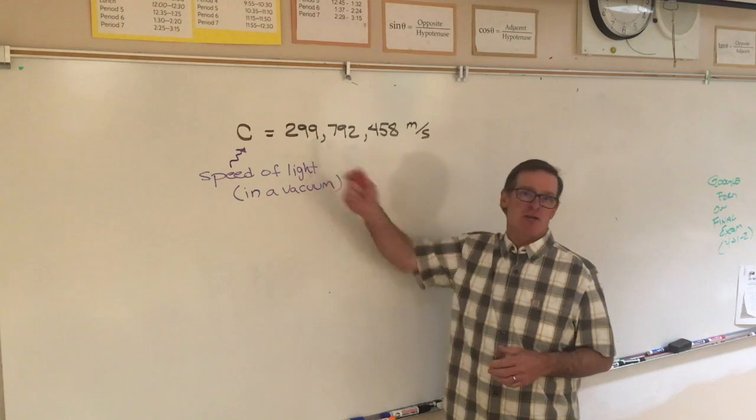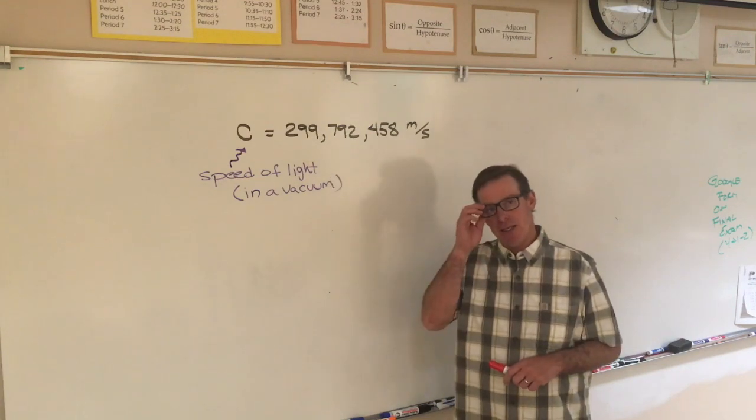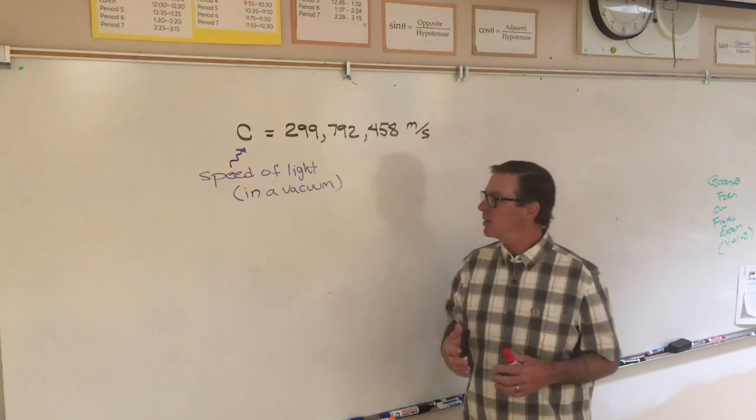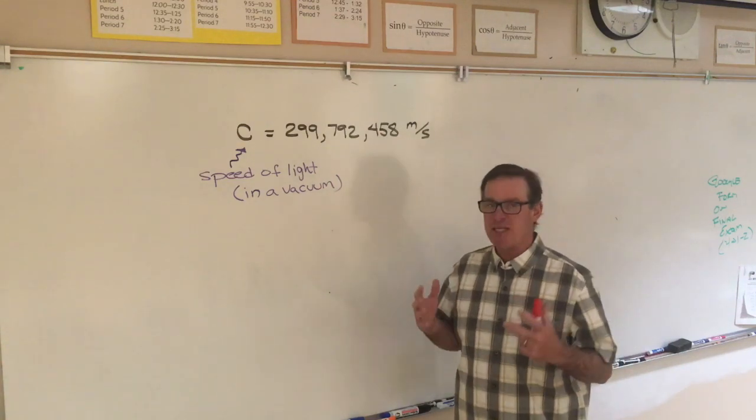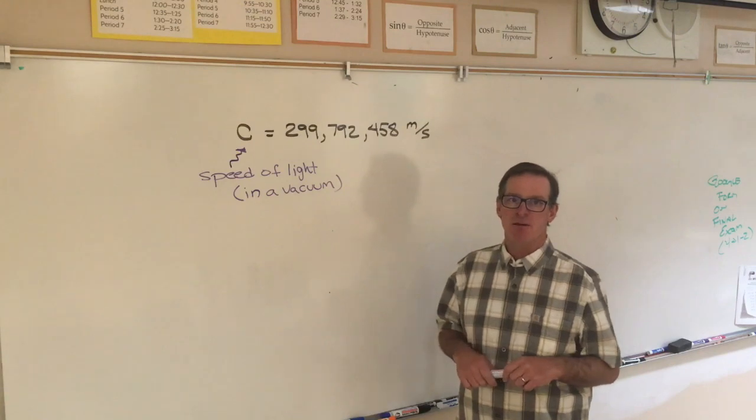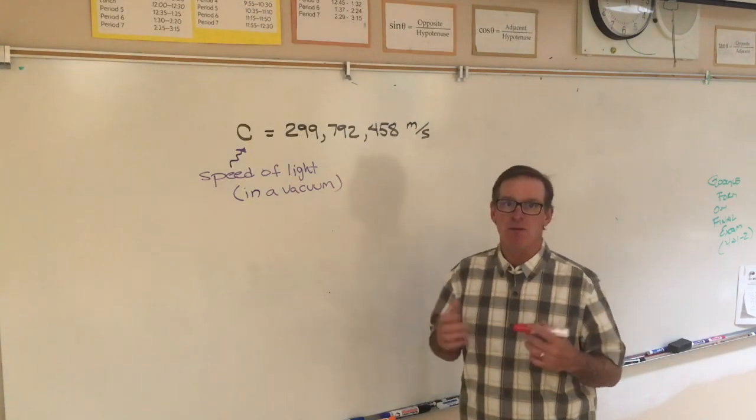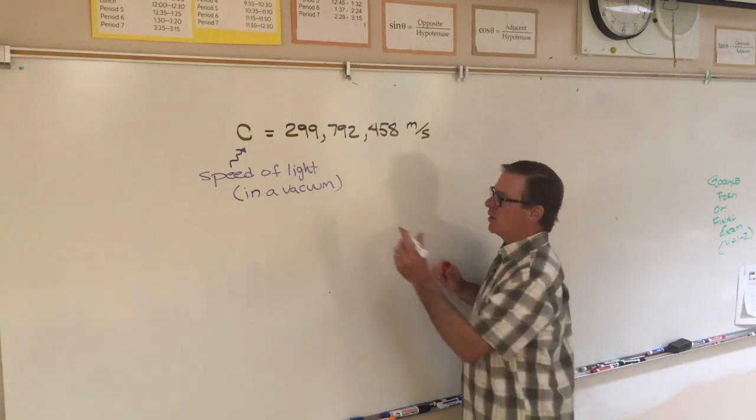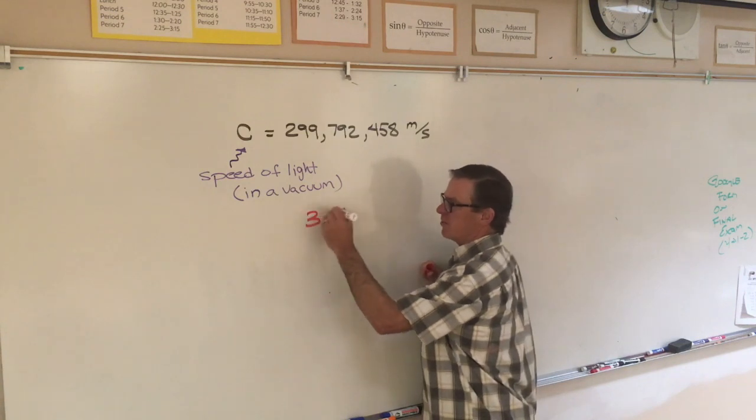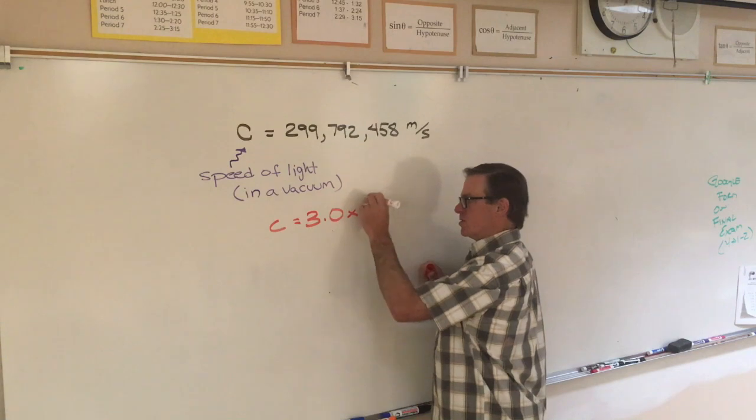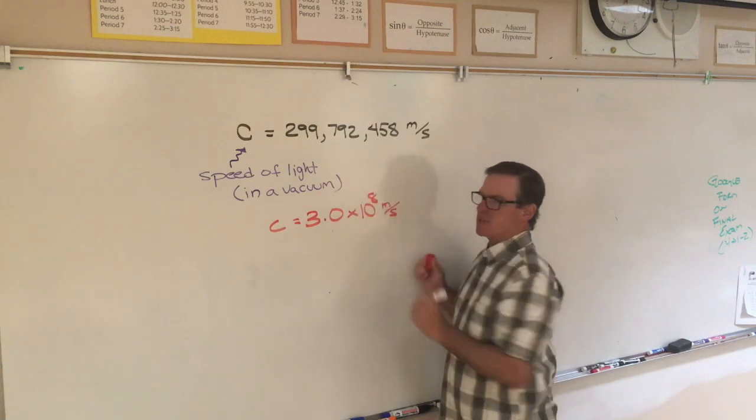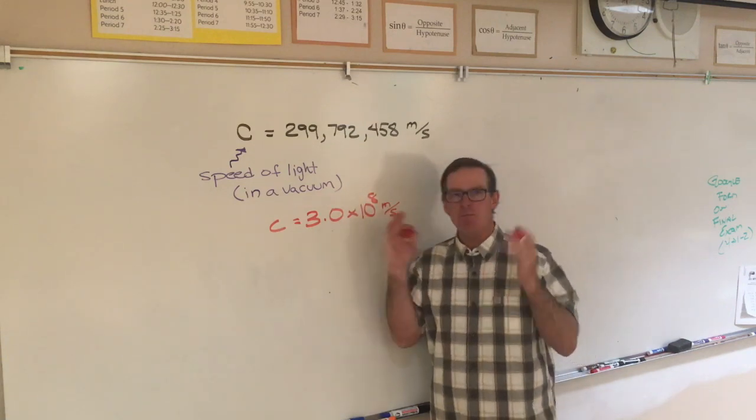Specifically in a vacuum where there's nothing to get in its way, empty space, light travels at over 299 million meters per second. We have typically rounded that off to 3 times 10 to the 8 meters per second, 300 million meters per second.